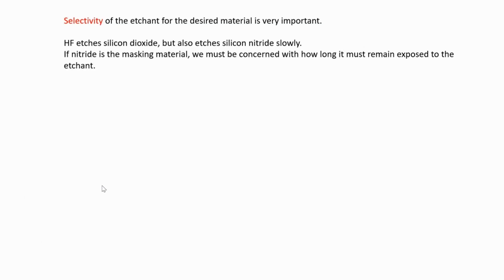When talking about isotropic etching, the selectivity of the etchant for the desired material is very important. For example, HF etches silicon dioxide but also etches silicon nitride slowly. If nitride is the masking material, we must be concerned with how long it remains exposed to the etchant.